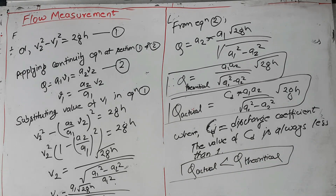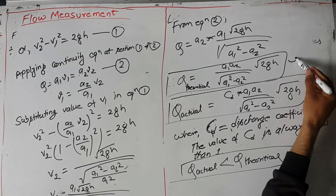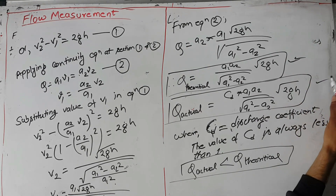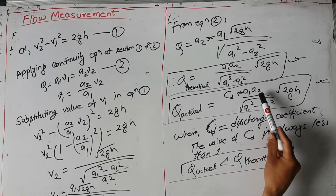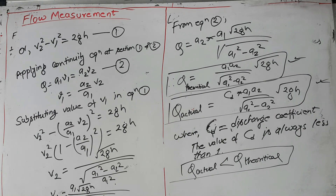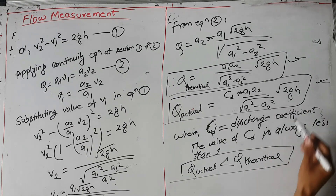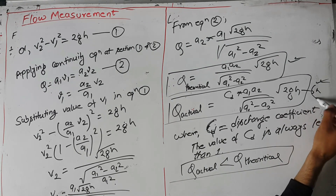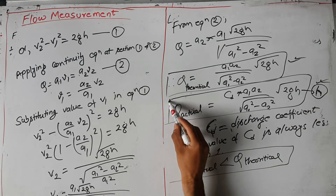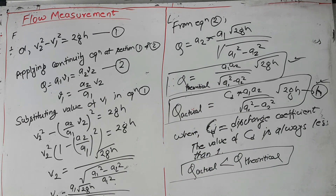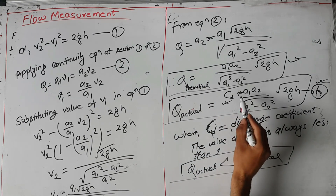The rate of flow through a venturimeter is derived here. These two equations govern the rate of flow through a venturimeter. If we know the area of cross section at the inlet and throat sections, and if we know h — the pressure head difference at sections 1 and 2 — we get the discharge through the venturimeter. For the actual value of discharge, we use the discharge coefficient CD.